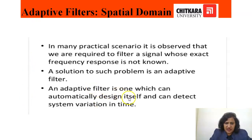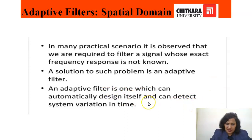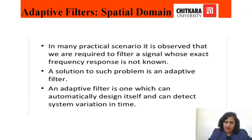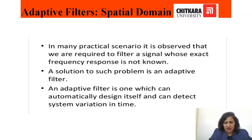For cases where only noise is added we will use adaptive filters. In many practical scenarios it is observed that we are required to filter a signal whose exact frequency response is not known. The solution for such a problem is an adaptive filter. Its beauty is that it can automatically design itself and can detect system variation in time — it will make small windows of the complete image and, based on statistical parameters, analyze where the noise is. If noise is present it will filter it; if no noise is there it will pass the image as it is.